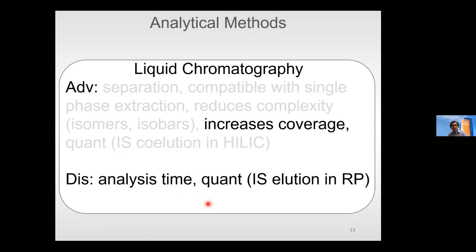Moving to liquid chromatography: one advantage is increased coverage — you will generally be able to measure many more lipids compared to shotgun, depending on the method. However, this comes at the expense of analysis time, as LC runs can be longer. In some cases, quantification may not be comparable to shotgun, especially when using reverse phase and your internal standard is not co-eluting with the lipid class you want to measure, which is not the case in HILIC, for example.